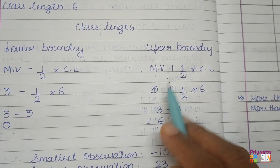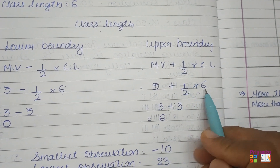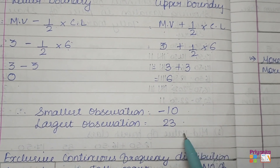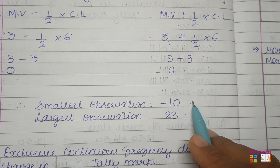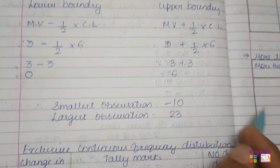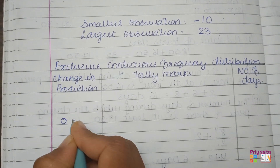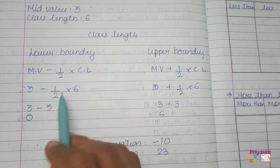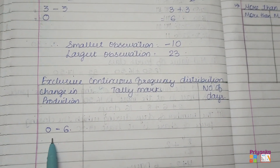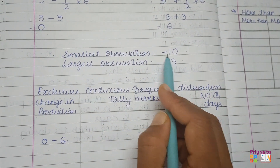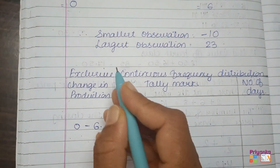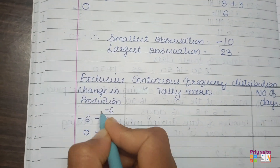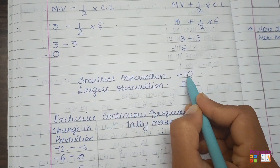The mid-value is 3 and the class length is 6. Using the formula: lower boundary equals mid-value minus half of class length, so 3 minus 3 equals 0; upper boundary equals mid-value plus half of class length, so 3 plus 3 equals 6. The smallest observation is minus 10 and the largest is 23. Since the data includes negative values, we also go in descending order: 0 to minus 6, then minus 6 to minus 12 to cover the smallest observation.